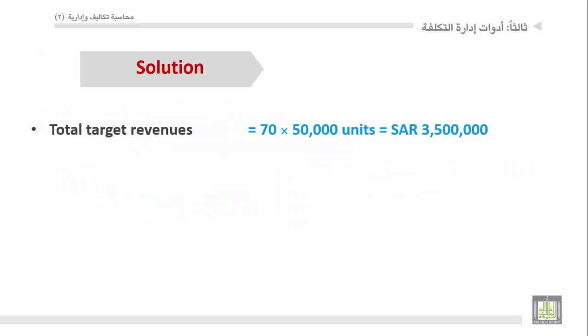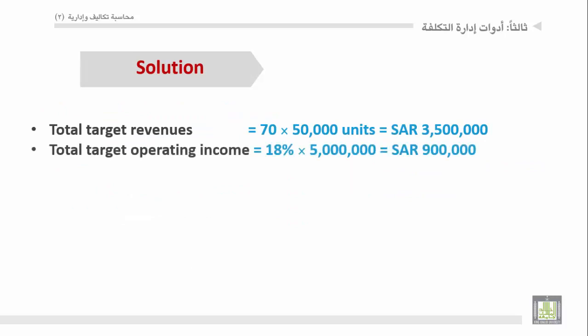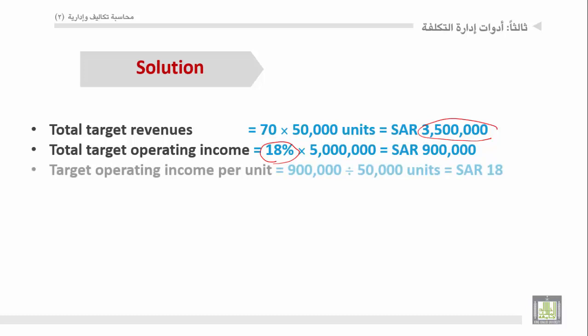Total target revenue = 3,500,000 SR. Total target operating income: بنضرب 18% عائد على الاستثمار في الخمسة مليون ريال استثمارات، تطلع 900,000 S.R.